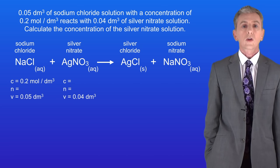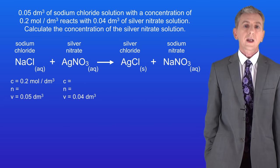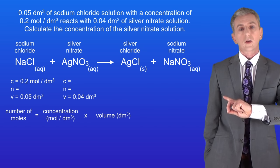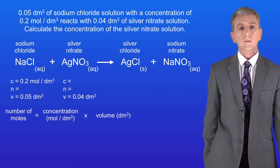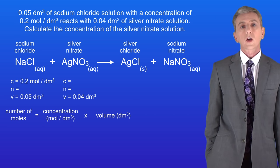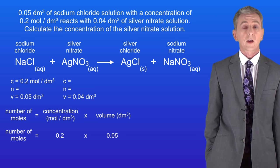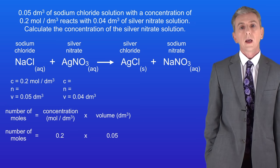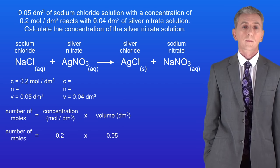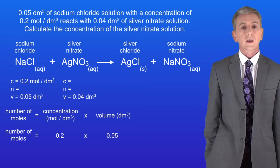Looking at the sodium chloride, we now know both the concentration and the volume, so we can calculate the number of moles. The number of moles equals the concentration multiplied by the volume: 0.2 moles per decimetre cubed multiplied by 0.05 decimetres cubed, giving us 0.01 moles.